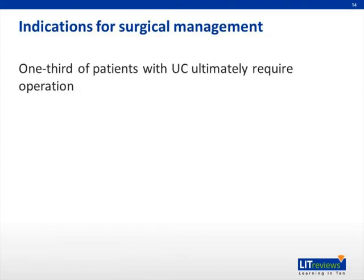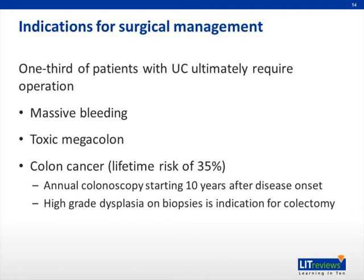Let's discuss the indications for surgical intervention for ulcerative colitis. Ultimately, one-third of patients with ulcerative colitis will require surgery in their lifetime. Indications for emergency surgery include massive colonic bleeding and toxic megacolon. Another major indication for surgery is the development of colon cancer. Patients with ulcerative colitis are at increased risk, and surveillance with annual colonoscopy is recommended starting 10 years after disease onset. If dysplasia is noted on biopsies, this is generally an indication for colectomy.